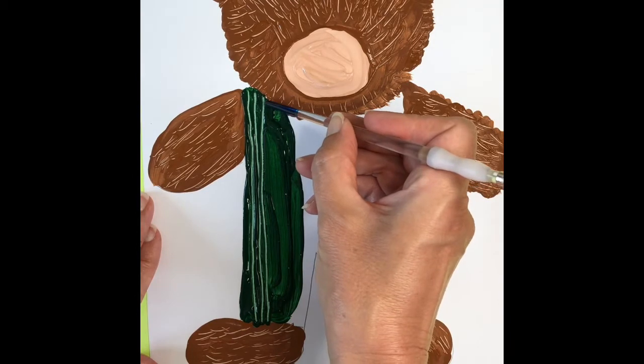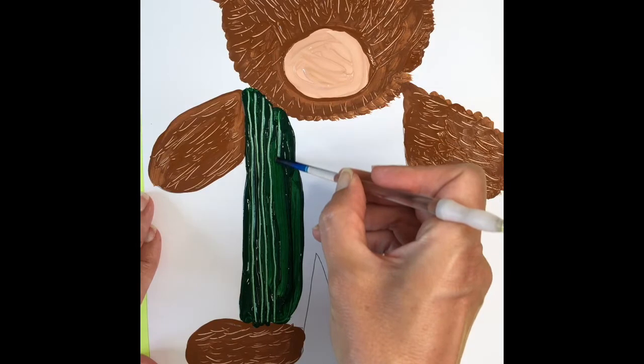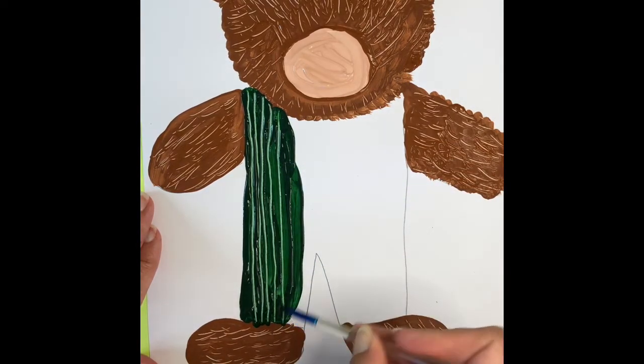And it's okay if these lines aren't perfectly straight, but they're one right next to each other. These are vertical lines going down the overalls.